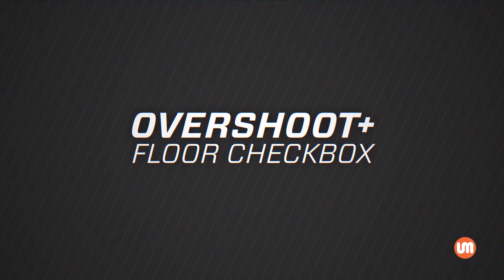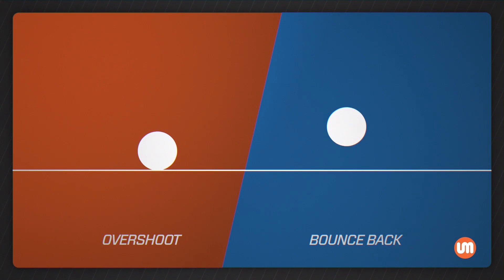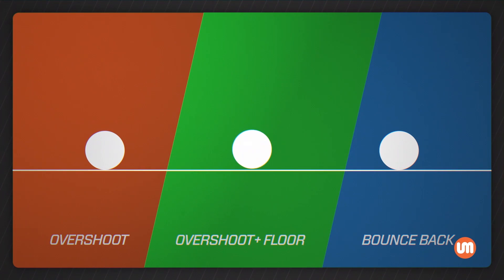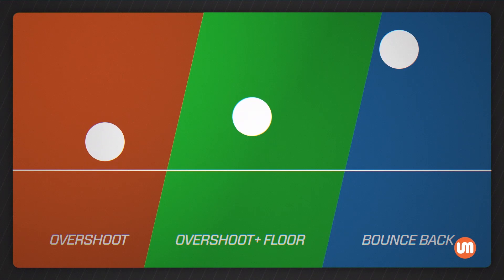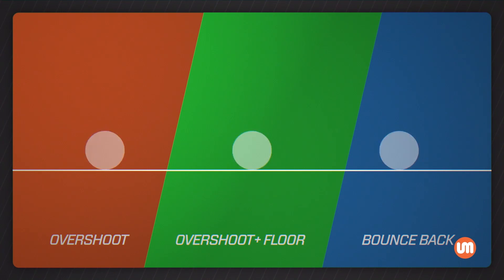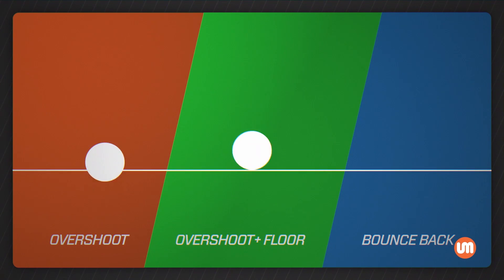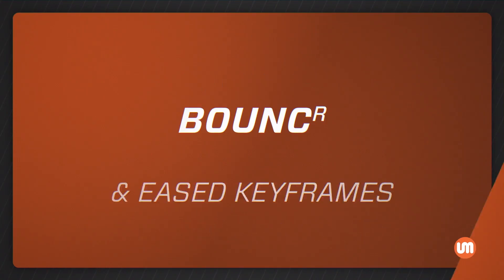We added a floor checkbox to the overshoot controller. You can turn this on to mimic a bounce-back expression in the overshoot controller. It's not the same as the bounce-back expression and may not be as realistic. It was a feature that I had in my original script, and I took it out when I put in the true bounce-back expression. However, I missed it and decided to put it back in.